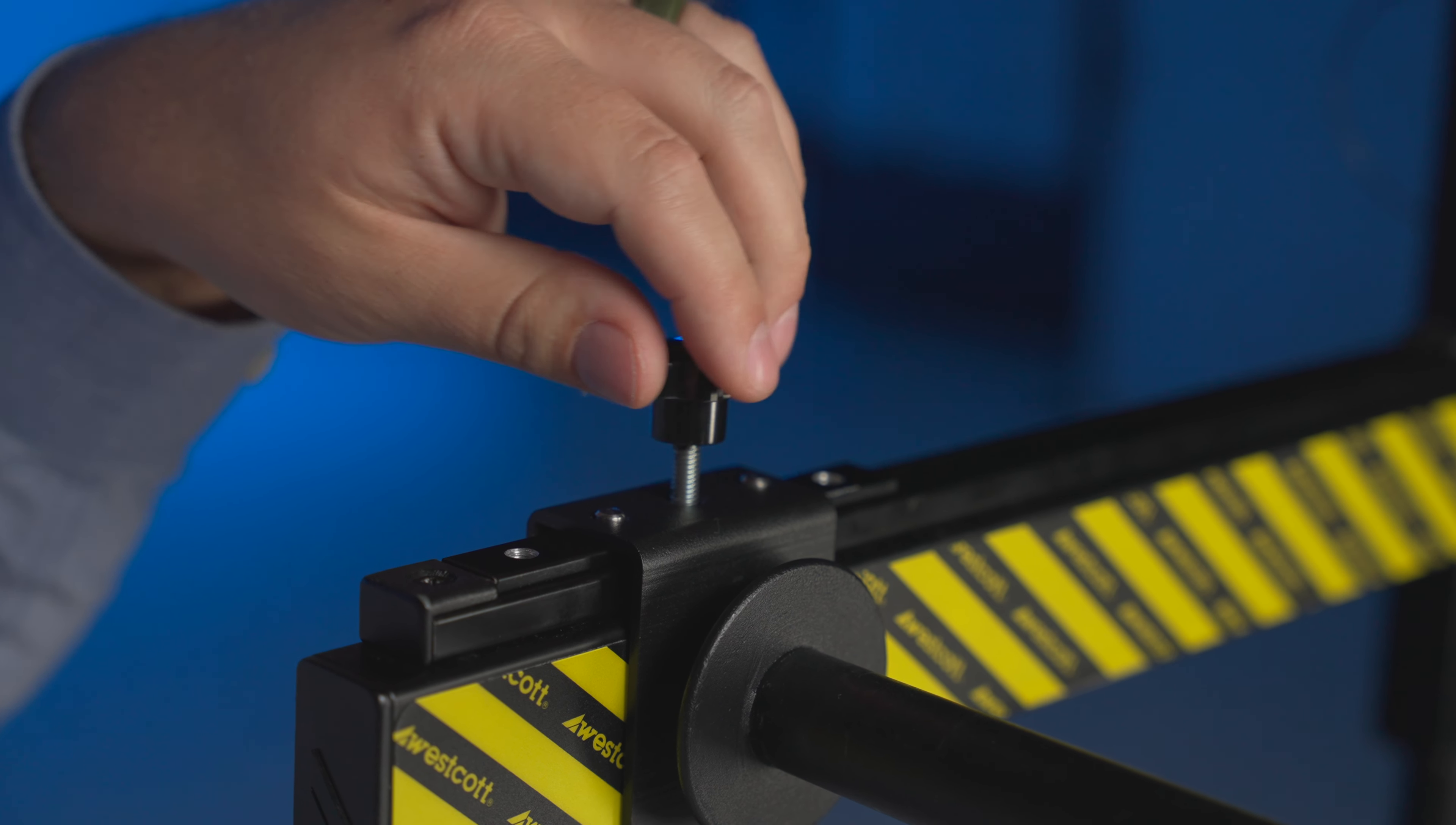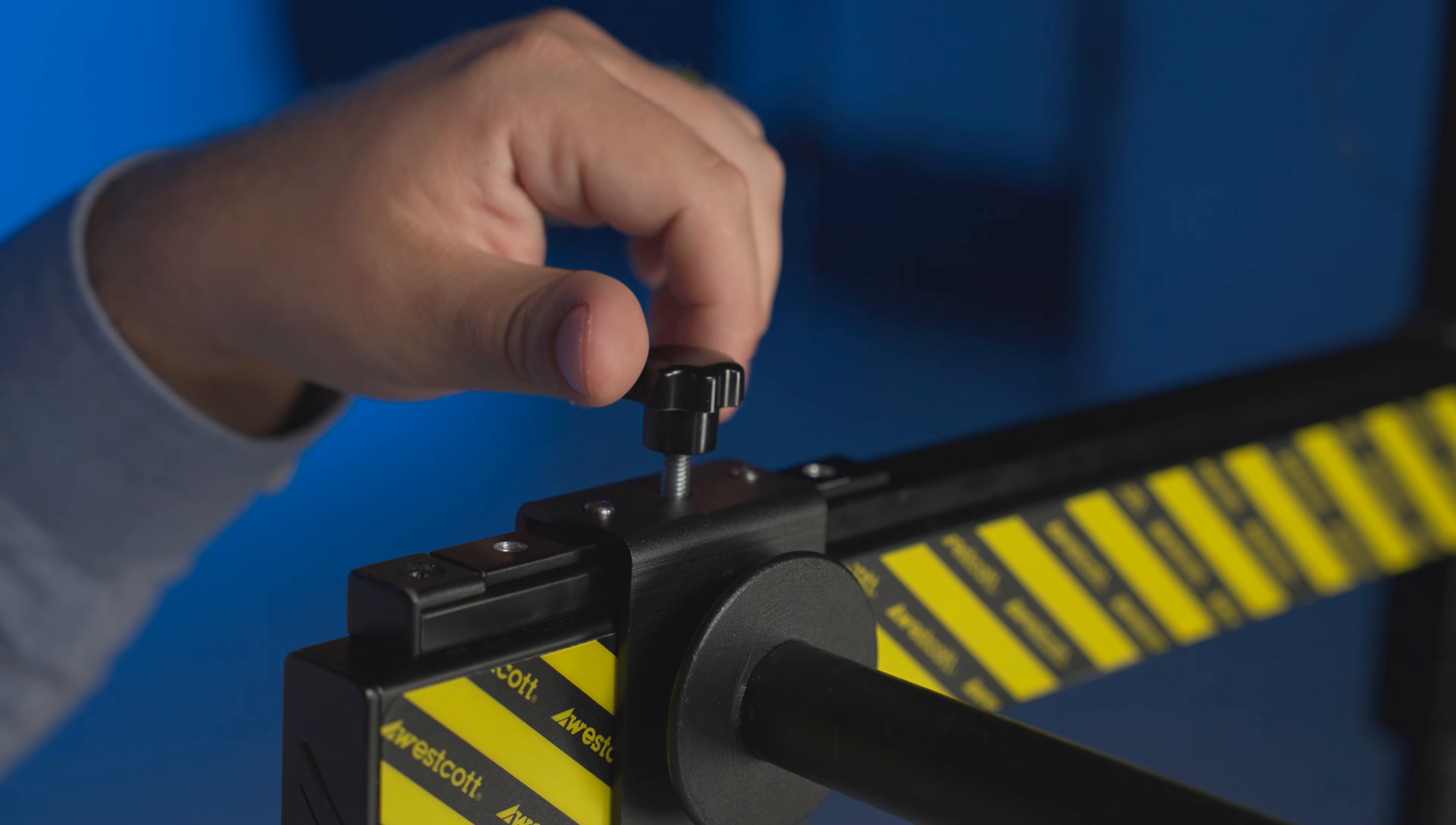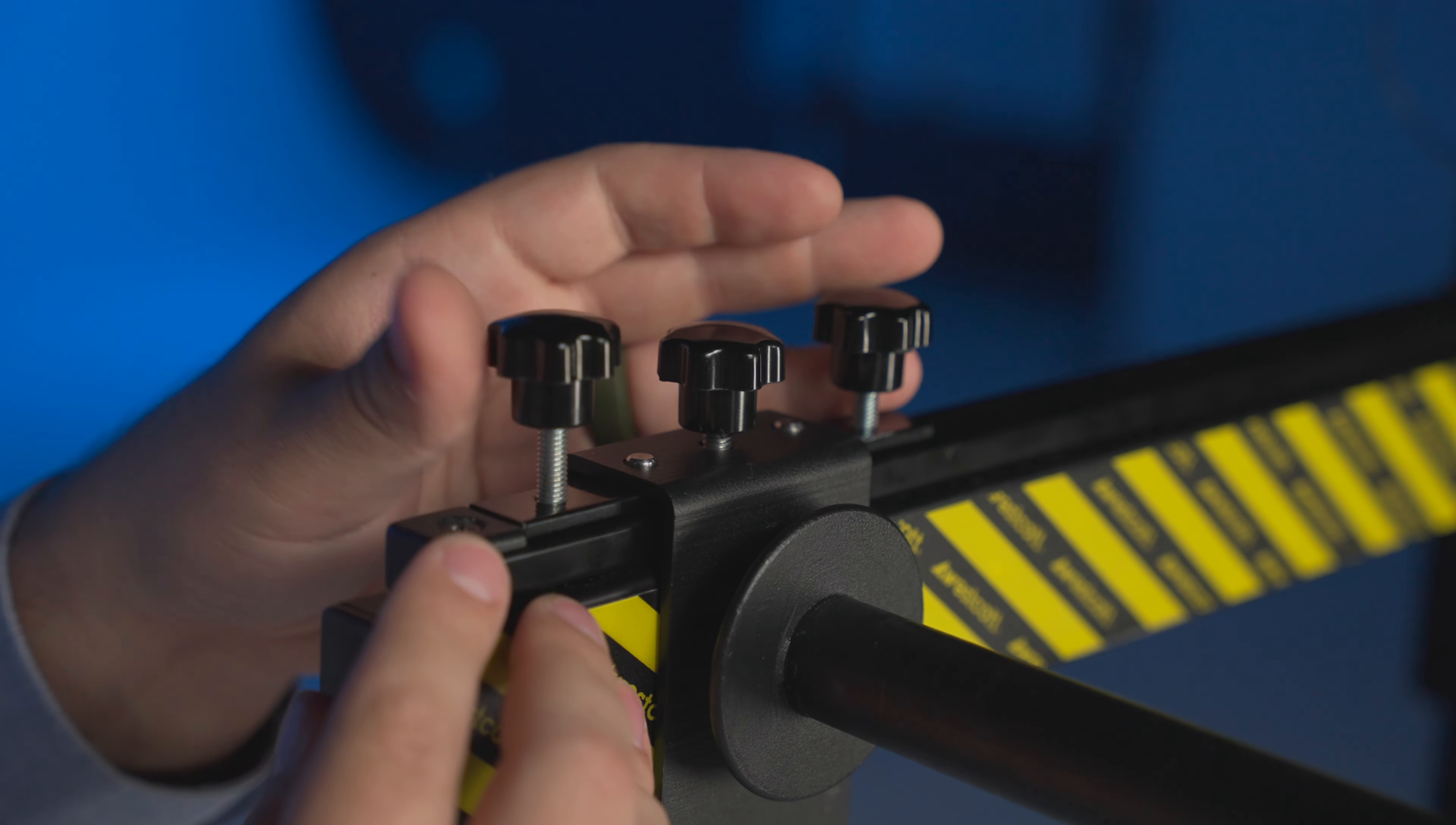Insert one counterbalance thumb screw into the thread located between the two pegs on the weight plate bracket. Store the remaining two thumb screws in the unused set screw holes on the counterbalance slider.